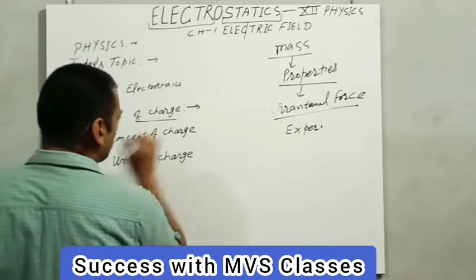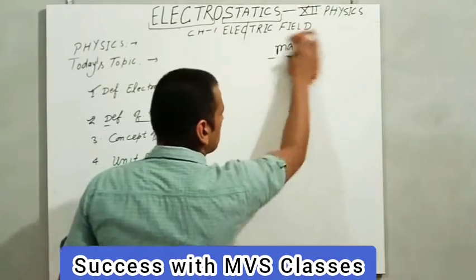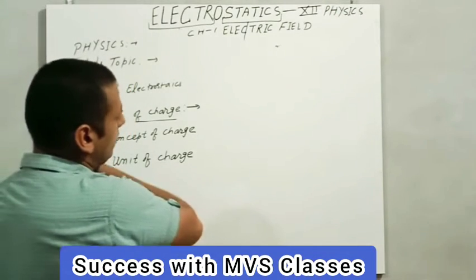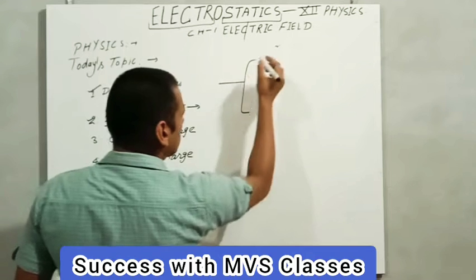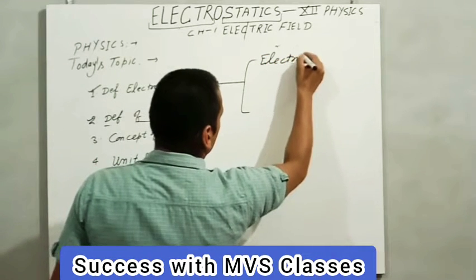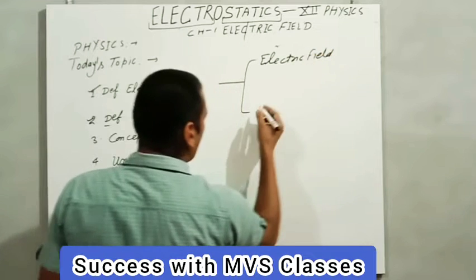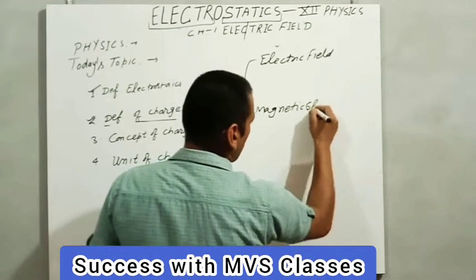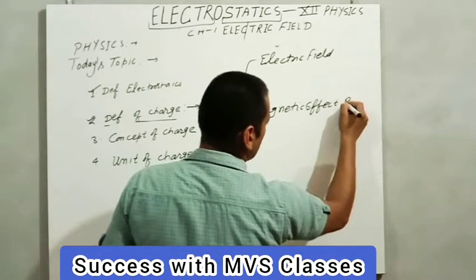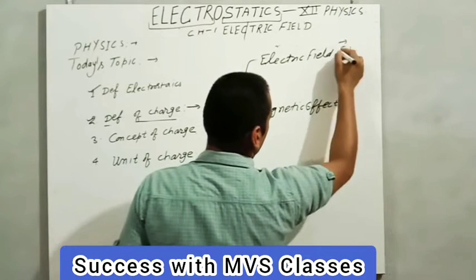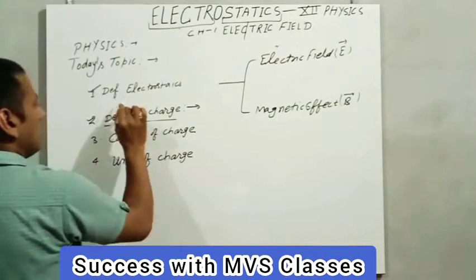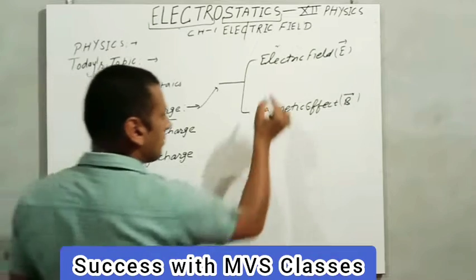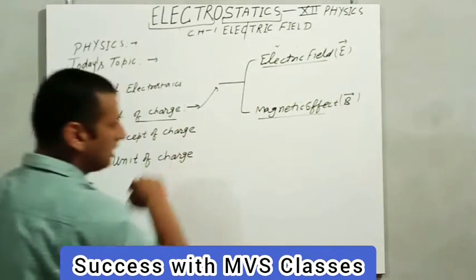Charge किसी भी body की एक property है — it is a property of any body due to which a body shows two effects. First one is electric effect — electric field effect — and second is magnetic effect, which is denoted by B, and electric field is denoted by E. जब हम charge की definition करते हैं, तो charge दो effect को show करता है: एक electric field को और second magnetic field को।